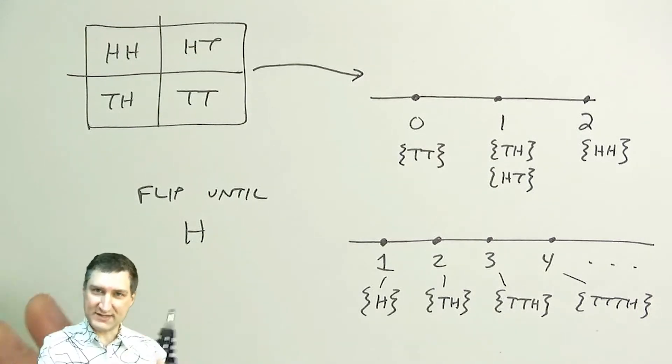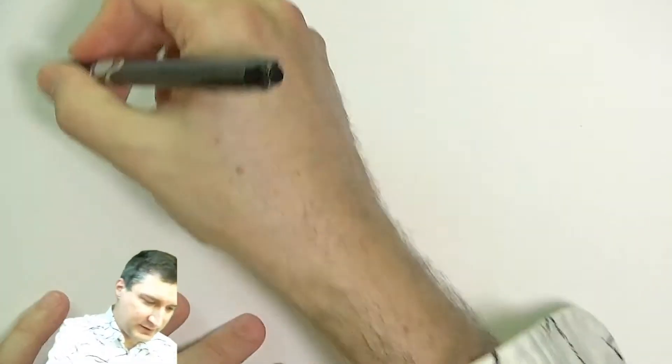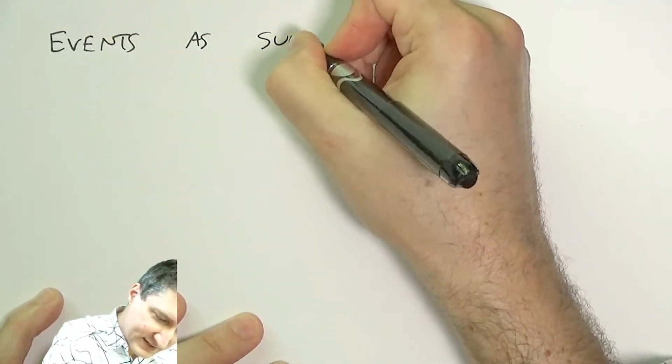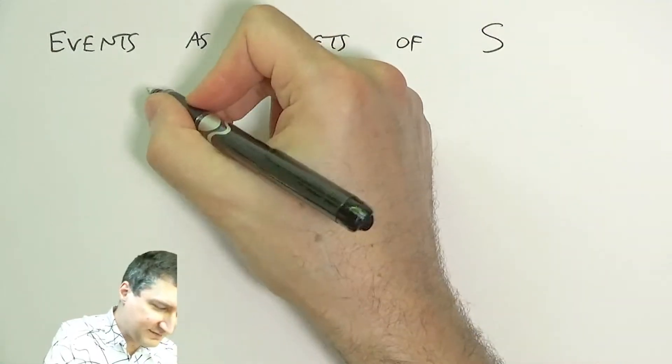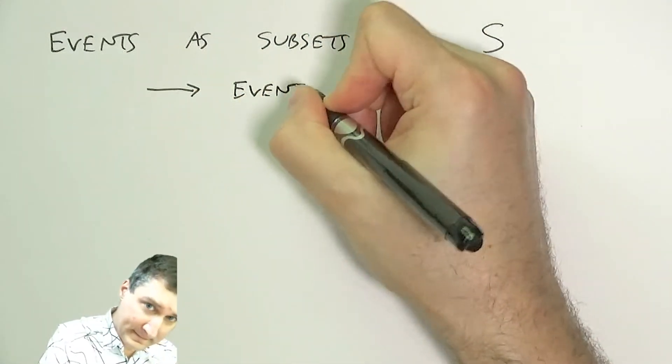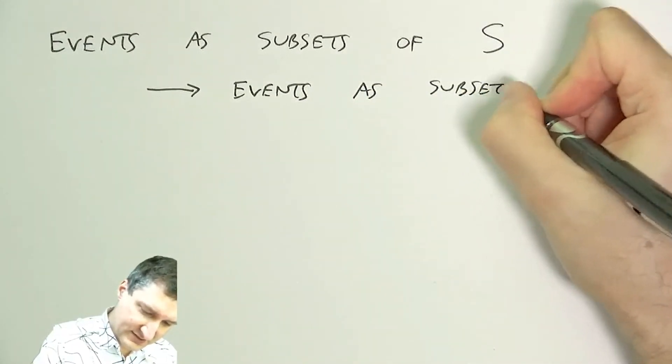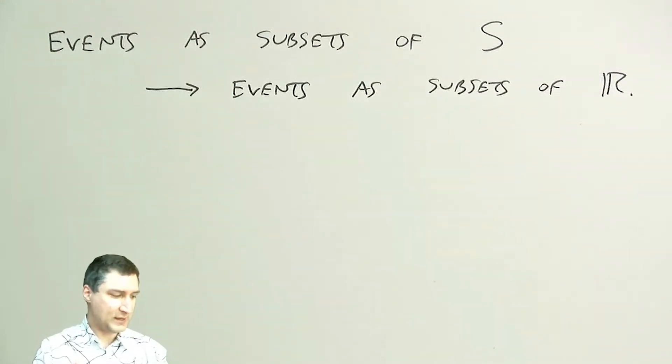And in the same way, the idea of events in the sample space carry over to events over here on the real line. So events as subsets of the real line for random variables.